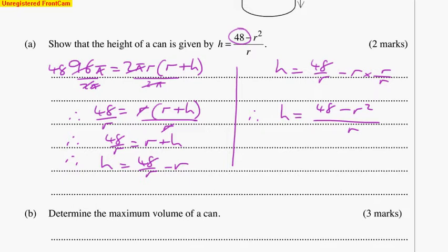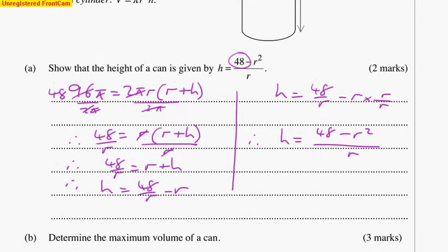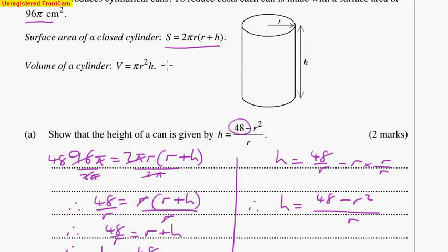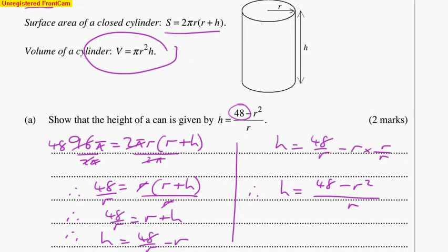Part B is to determine the maximum volume of a can. So we use the volume equation which is given in the question. It's that one there. Volume is πr²h.